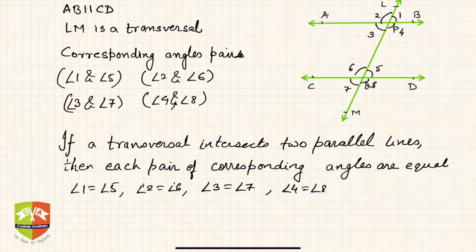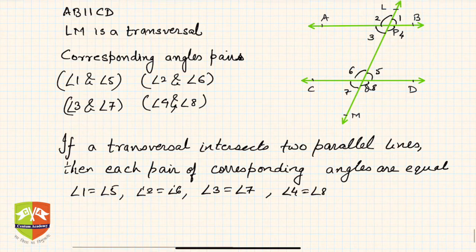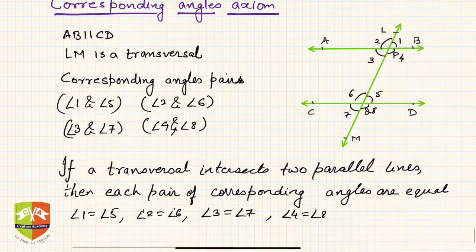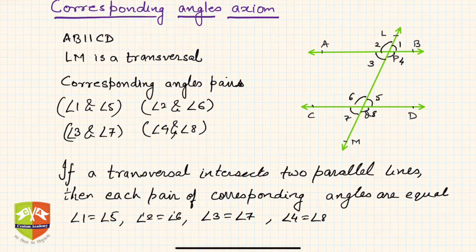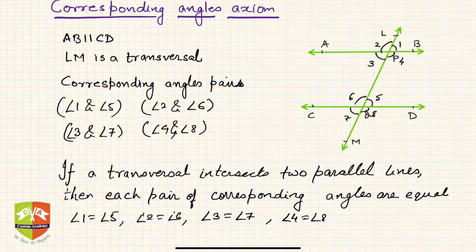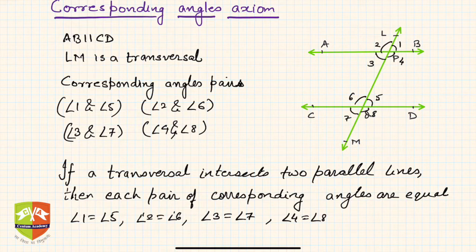This is an axiom, so we can't really prove it — it's a statement by observation and experiment. We have seen that angle one is always equal to angle five, two equal to six, three equal to seven, and four equal to eight, only when the two lines are parallel.